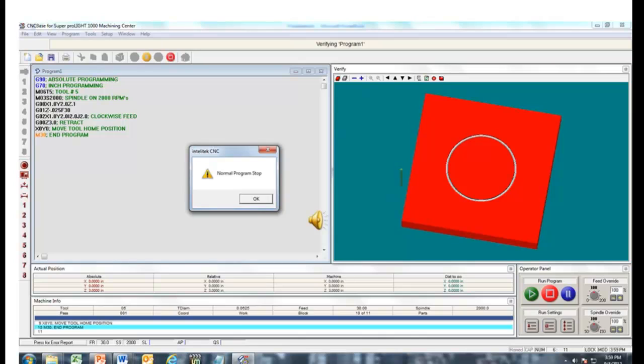There you have it, a normal program stop. We have a 2-inch circle within a 4x4 block.